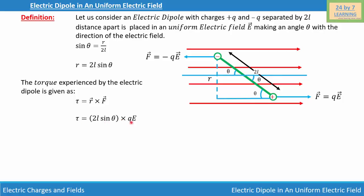We got the value of r from the geometric analysis and the value of F from the force on the charge. Simplifying, τ = 2ql E sin θ. Since the electric dipole moment p = 2ql, substituting gives τ = pE sin θ.